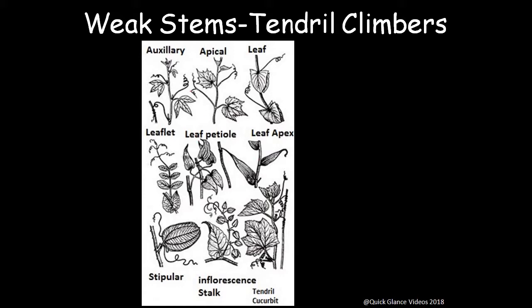Here are pictures of the various forms of tendril climbers — axillary type, apical, leaf, leaflet, leaf petiole, leaf apex, stipule, and inflorescence. The cucumber type encircles the support, as shown in the picture.